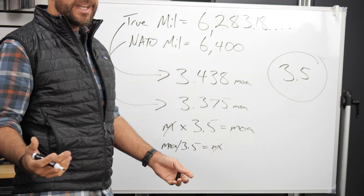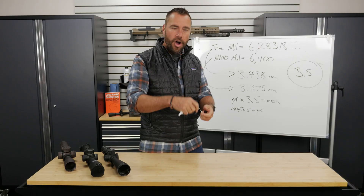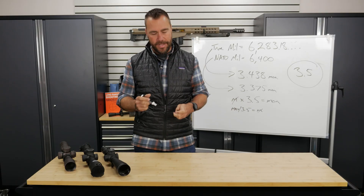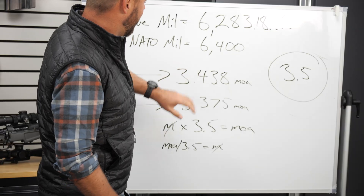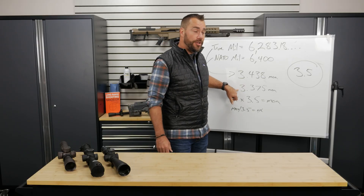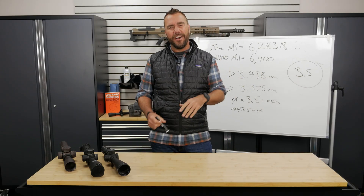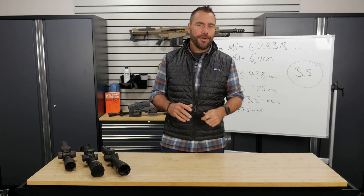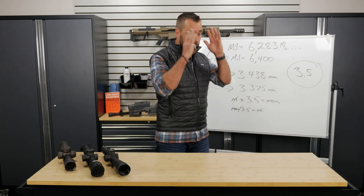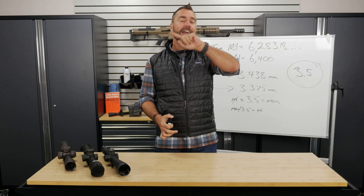We'll use the easy numbers again: 7 minutes divided by 3.5 is 2 mills. So now you know there's a different number of mills in the circle depending on how you count them, you know the precise number you can use to convert, and I've given you the rounded number I like to use that makes it a lot easier to convert in the field. Write that down in your dope book, stick with your system, learn your system — but if you ever have information in the other unit, you now know how to convert it.